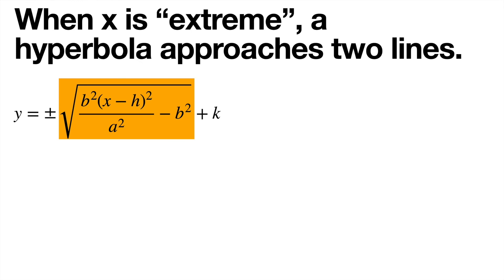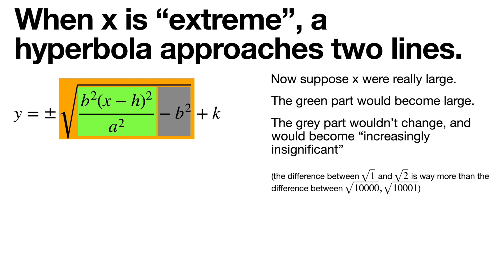So what we're going to argue is that when x is extreme, meaning very large or very negative, a hyperbola is going to approach two lines. So take a look at that square root expression in the middle of this equation. And I'm going to highlight two parts of it, the two terms within it. Now, if x were really large, the green part would also become very, very large because you're multiplying by x minus h squared. And when x is large, that thing is large.